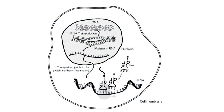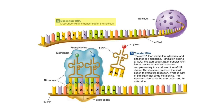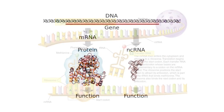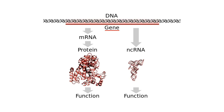mRNA or messenger RNA is formed from a DNA as an identical copy. Through a process called transcription, the genetic code in DNA is transferred to mRNA, and this mRNA will facilitate the further expression of the genetic codes like protein synthesis. rRNA or ribosomal RNA together with proteins makes up the ribosome. A ribosome is a cytoplasmic particle that serves as the site of protein synthesis. tRNA or transfer RNA is the RNA that transports specific amino acids to the ribosome for protein synthesis. The ribosome links these amino acids according to the codes in the mRNA to synthesize a specific protein.